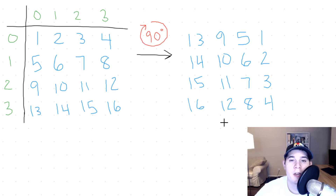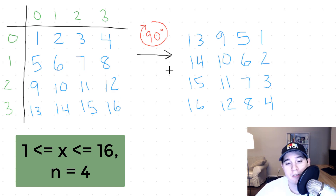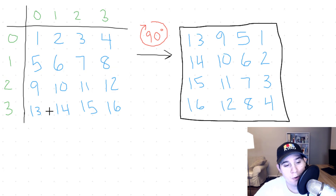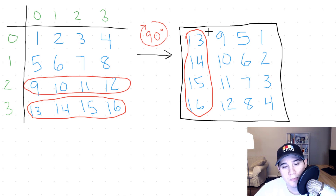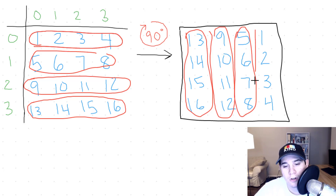We're going to start off with an N by N matrix of size 4, and the numbers are going to go from 1 to 16 inclusive. We need to complete a 90-degree rotation clockwise — this would be our goal state after the appropriate rotation. As you can see, the bottom row becomes our first column, the next row becomes our second column, the next becomes our third column, and then the top row becomes our last column.